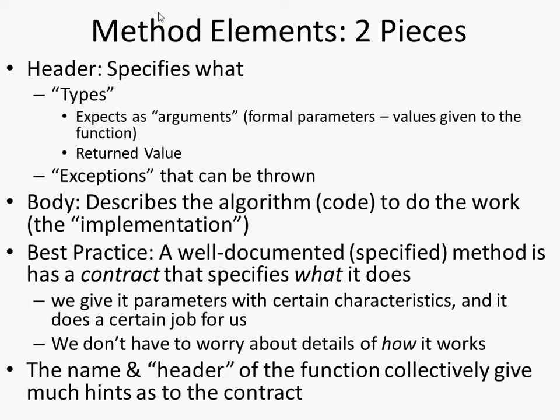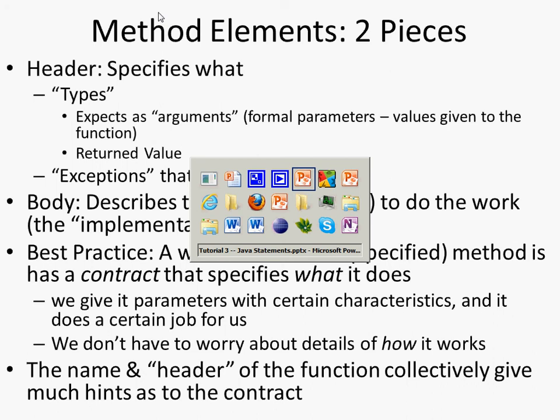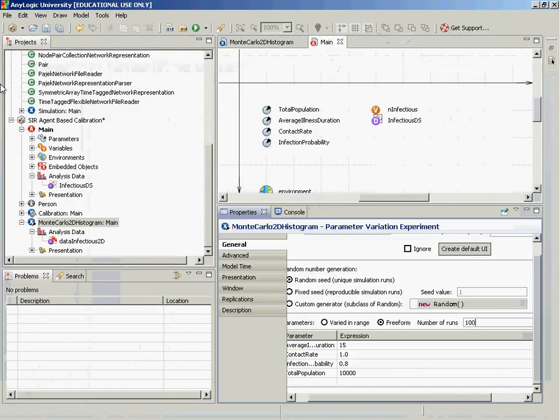It's valuable to have a sort of contract: if someone gives a method the information it needs, that clearly indicates what it does without requiring you to look at the body of the method. By looking just at the header, which is specified in any logic, you can understand the method's purpose.